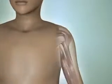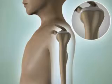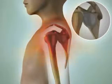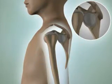Symptoms include the shoulder slipping or popping out of place and a general feeling of instability, pain in the shoulder and upper arm, and weakness.